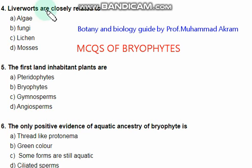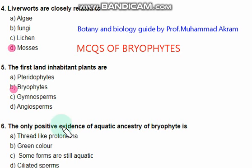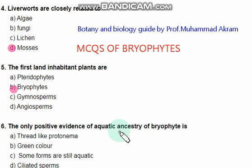The next question is: liverworts are closely related to which group? The right option is mosses. The first land-inhabiting plants are bryophytes. The only positive evidence of aquatic ancestry of bryophytes — meaning that bryophytes have aquatic ancestors — is being investigated.